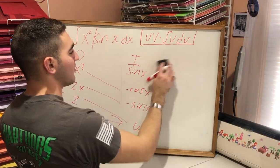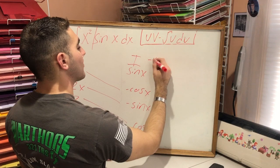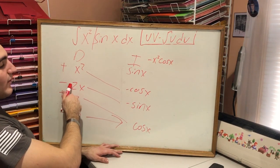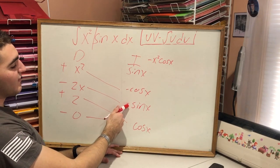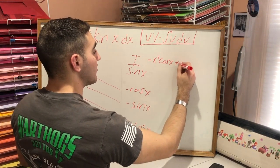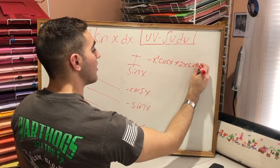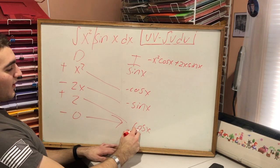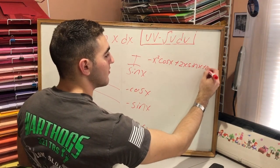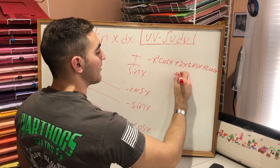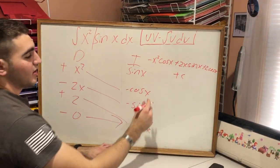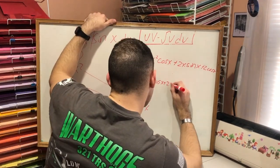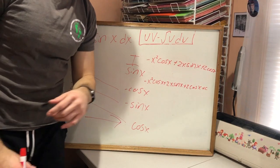So it's going to be negative. I should probably write this smaller, here we go. Negative x squared cosine x, right? And the next one, negative 2x times negative sine x is going to go to positive, plus 2x sine x. And the last one is going to be 2 times cosine x, which is going to be plus 2 cosine x. And don't forget plus C. And that is your answer.